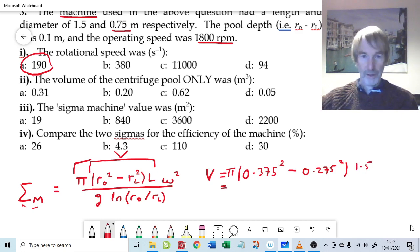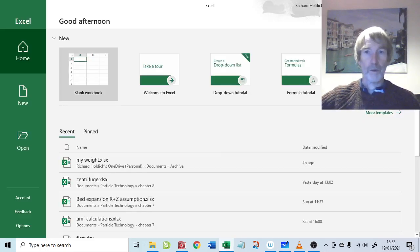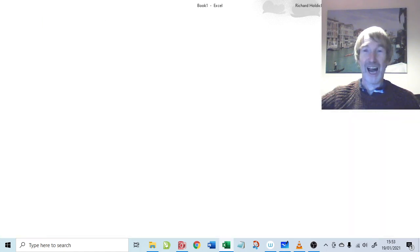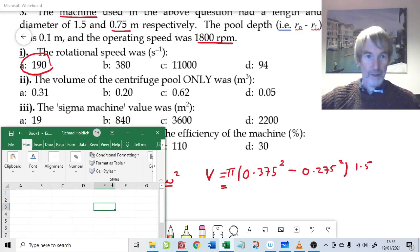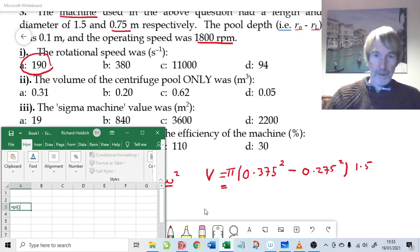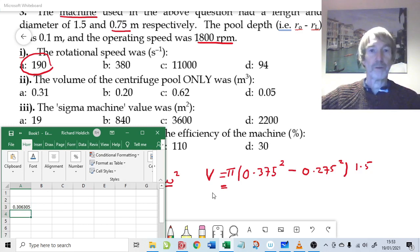Once we multiply it by the length which is 1.5 meters, the volume of the pool starts to get a little bit complicated for the calculator, so let's pull up the spreadsheet. The centrifuge volume is going to be equal to π times open brackets 0.375 squared minus 0.275 squared times by 1.5. So that is 0.31 if we're going to go to two significant figures. So the volume of the centrifuge pool is 0.31 meters cubed.